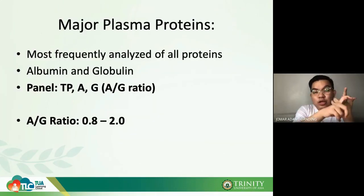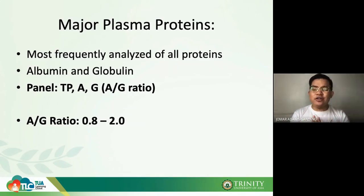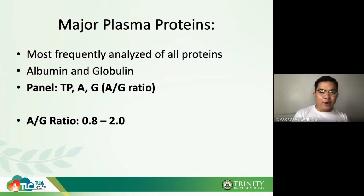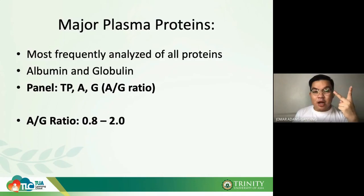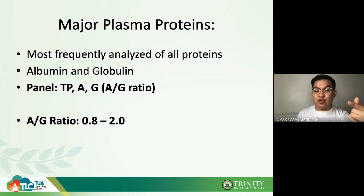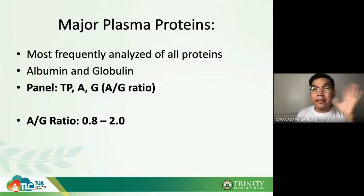More details on that will be covered in the liver function discussion next week. Some references also include prealbumin as a third category — so we may have prealbumin, albumin, and globulin — but routinely, the two major plasma proteins are albumin and globulin.